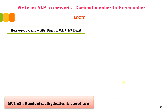This is an assembly language program to convert a decimal to hexadecimal number. All you need to do is know this equation: the hex equivalent will be equal to the MS digit multiplied by 0A plus the LS digit.